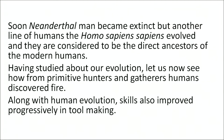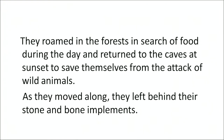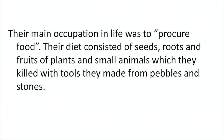Having studied about human evolution, let us see how primitive hunters and gatherers discovered fire. Along with human evolution, skills also improved progressively in tool making. Primitive humans — the hunters and gatherers — moved from place to place as foragers, leading a nomadic life. As nomads, they roamed large and distant areas with no permanent abode. They lived near water bodies such as riverbeds and lakes on the edges of forests where plants and animals were abundant, and also lived in caves in groups of 20 to 30. They roamed the forest in search of food during the day and returned to caves at sunset to save themselves from wild animals. Their diet consisted of seeds, roots, fruits of plants, and small animals they killed, using tools made from pebbles and stones.